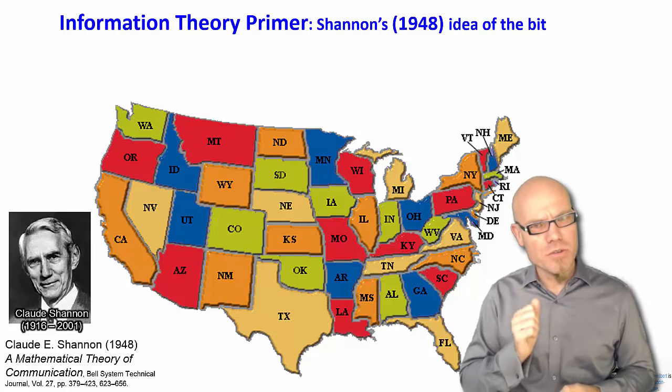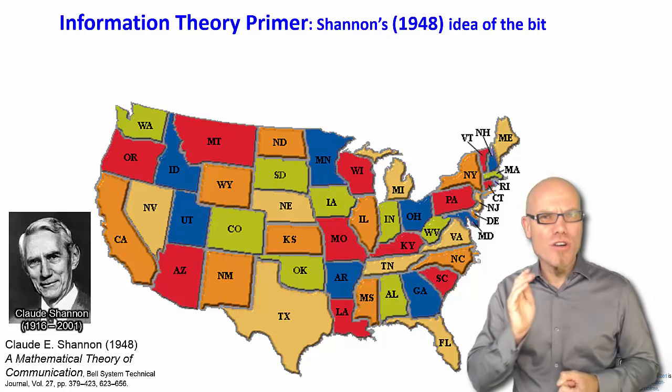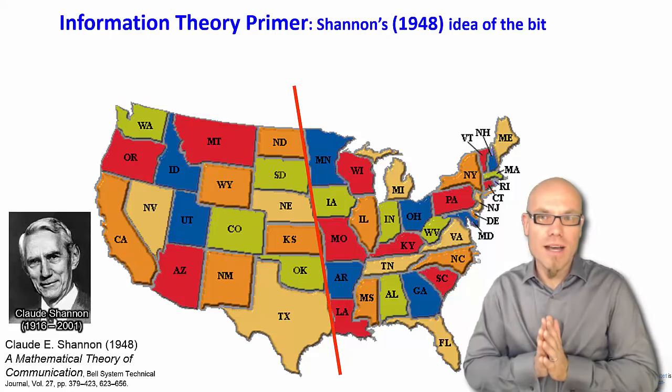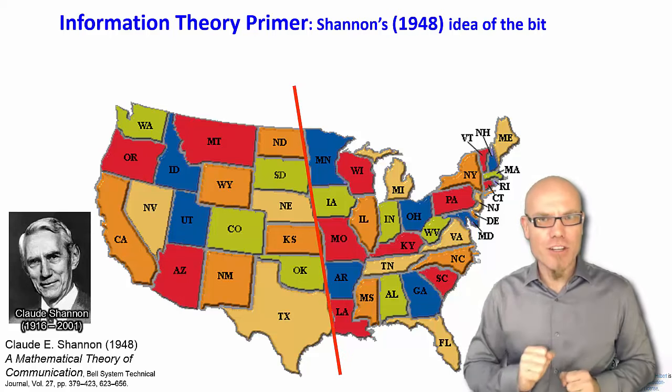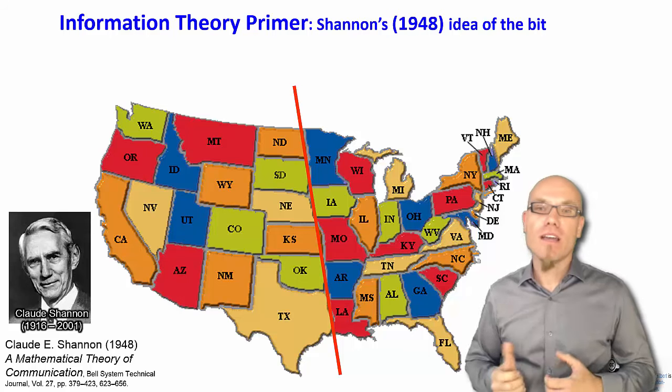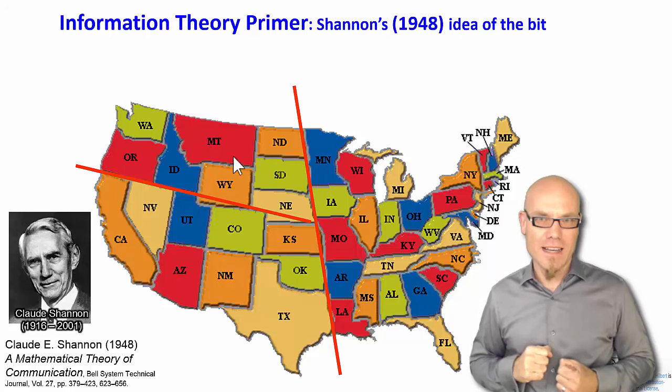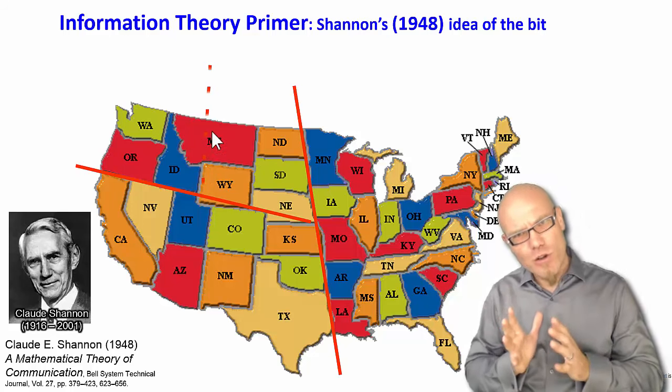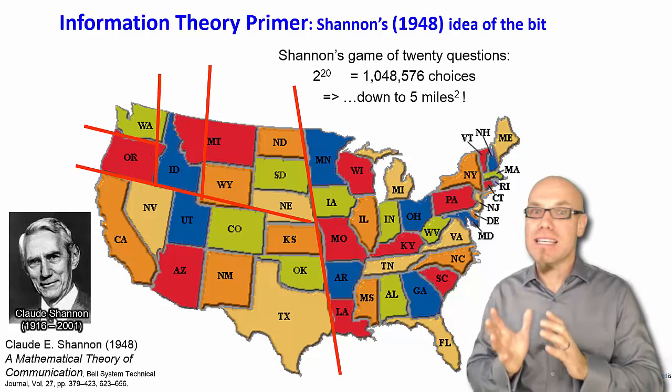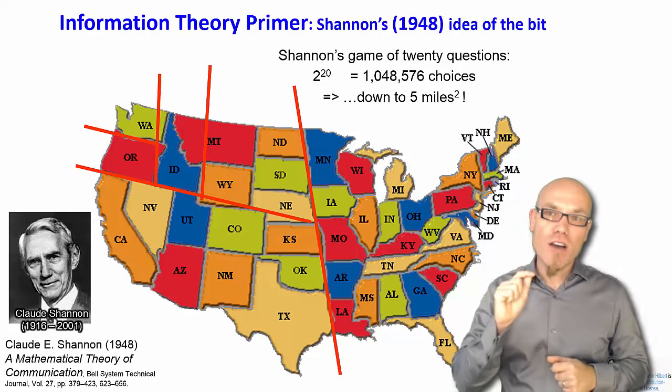Shannon showed that the most efficient way is what computer scientists nowadays call greedy search. You always divide the probability space by half. If you have no indication where it is, you divide the United States into east and west. Is it east of the Mississippi or west? Okay, it's west. Then is it north or south of this line? Then again we divide it. We say it's north. Then afterwards we again divide the probability space in half and we go down, down, and down.